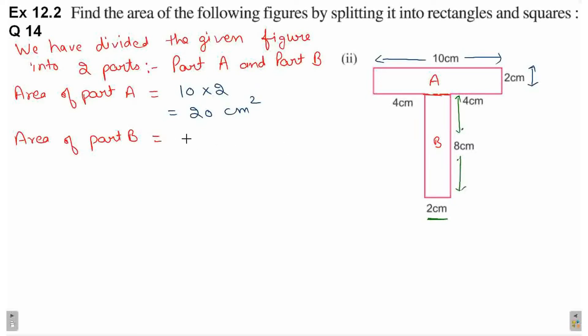Both sides are given, so we can calculate its area. Area of part B is 8 into 2, which equals 16 cm square.